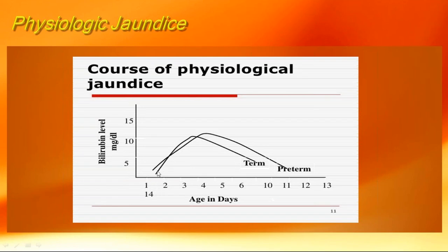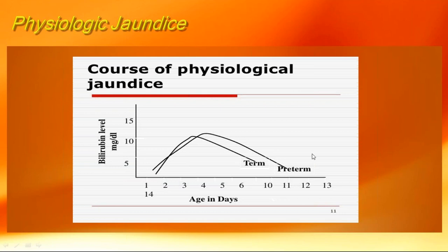The normal course of physiological jaundice: in a full-term baby, bilirubin starts rising after 24 hours, peaks around 10–12 mg/dL, and returns to normal by around day 10. In a preterm baby it can start a little earlier, peak up to 12–13 mg/dL, and may take 12–13 days to resolve. You can draw two curves of different colors for the exam — one for term and one for preterm.